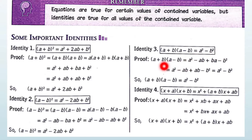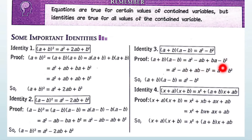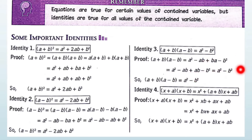You can verify the proof: A into A gives A square, A into minus B, then minus B into A, then minus B square. The plus and minus AB terms cancel out, so A square minus B square is confirmed as the identity.